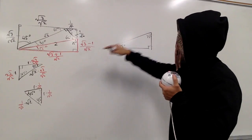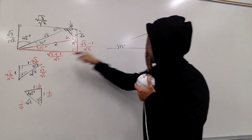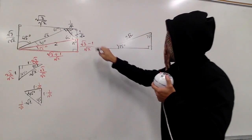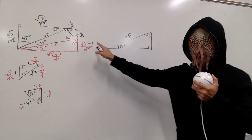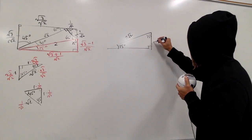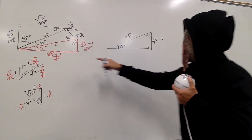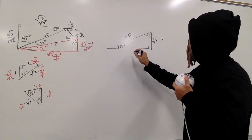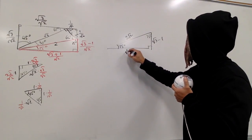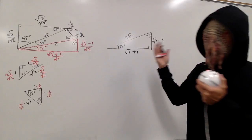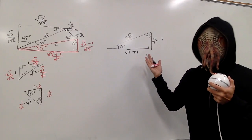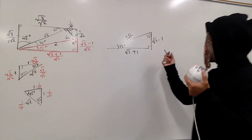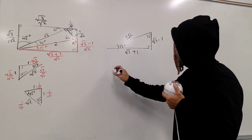So this right here: 2 times square root of 2 is just 2 square root of 2. And this times square root of 2 is just square root of 3 minus 1. And then this right here times square root of 2 is square root of 3 plus 1. And this right here is that special, special red triangle. From this, you can do a lot of things.